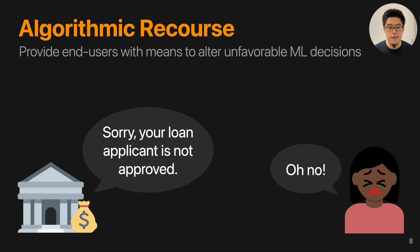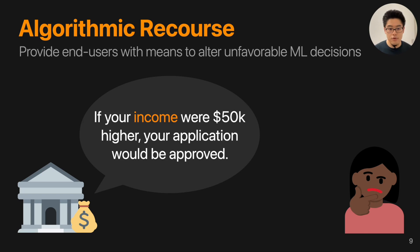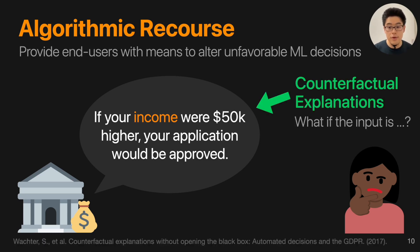So what is algorithmic recourse? Some researchers define it as a way to provide end users with different means to alter unfavorable machine learning decisions. To give a more concrete example, let's think about a loan scenario. Imagine a loan applicant applying for a loan at a bank, where the bank uses a machine learning model to make predictions. Unfortunately, the applicant was rejected. To help the applicant gain a better understanding and alter the unfavorable decision, the bank tells the applicant: if your income were $50K higher, your application would be approved. This statement is a counterfactual explanation — it has the form of: if the input record had some different values, maybe the outcome prediction would change.